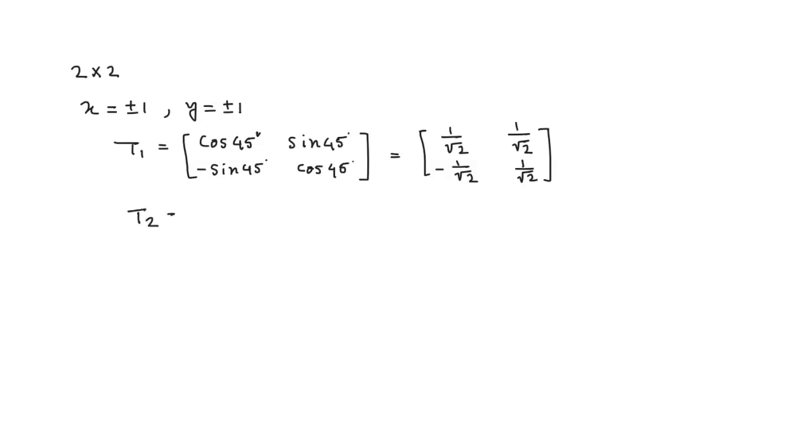Next, we find T2. The T2 matrix we can represent as 4 divided by root 2, 0, 0, 3 divided by root 2.